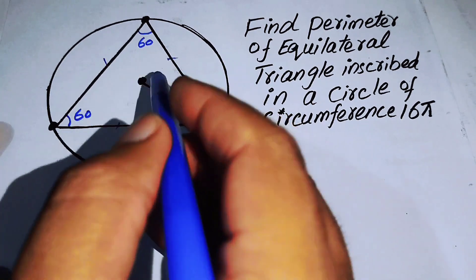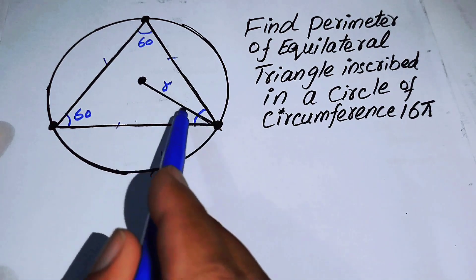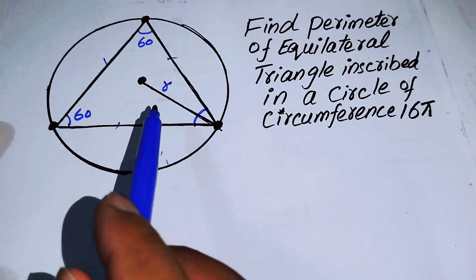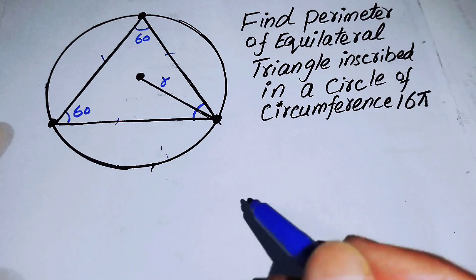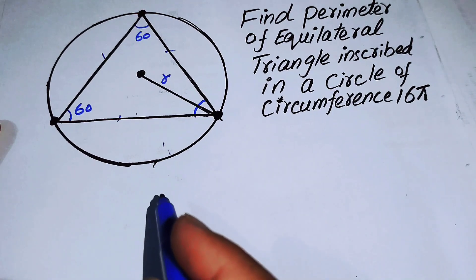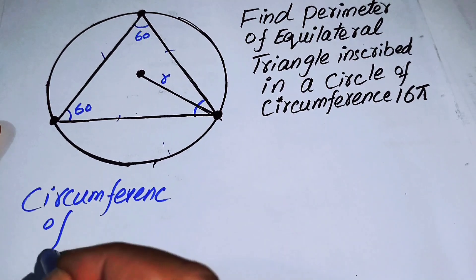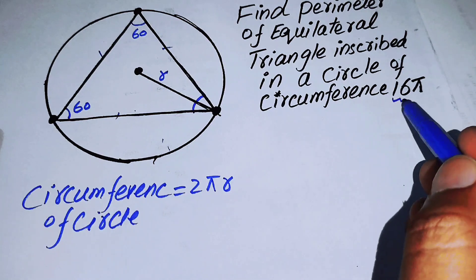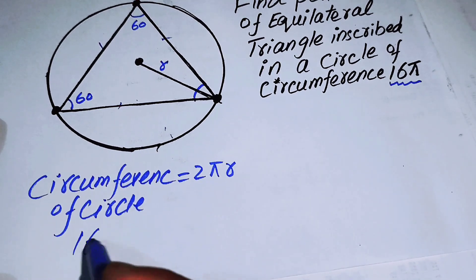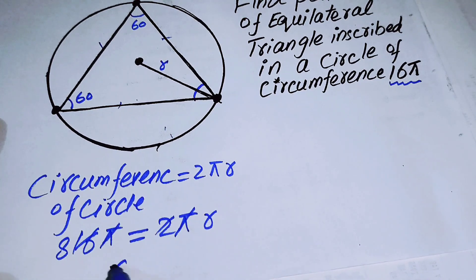The very first thing we are going to do is find the radius of the circle. This line segment from the center denotes the radius. Using the formula: circumference = 2πr, we substitute 16π = 2πr. The π cancels, and 16 ÷ 2 = 8, so the radius of this circle is 8.